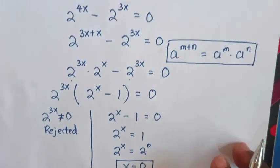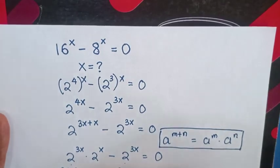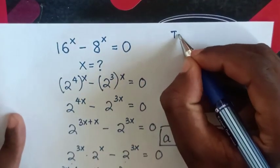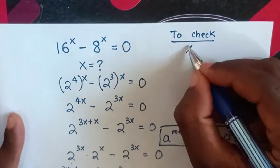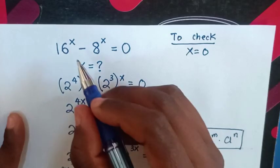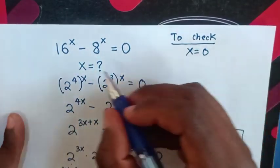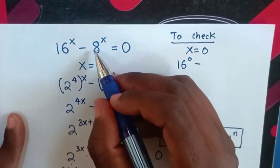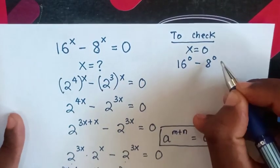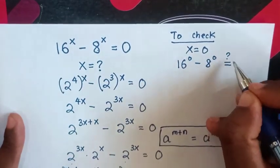Now to check if our answer is correct, to check we substitute the value of x = 0 into our equation. So it will be 16^0 - 8^0 is equal to 0.